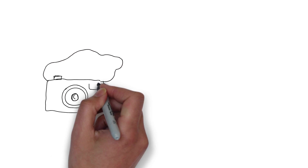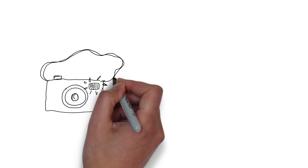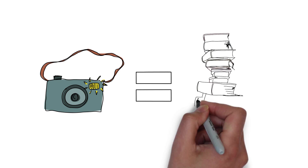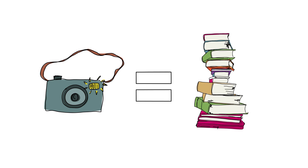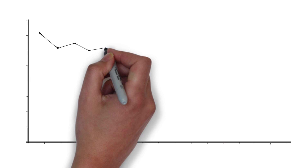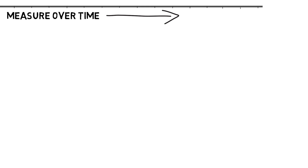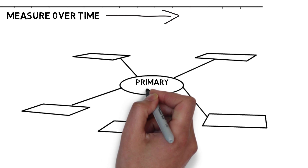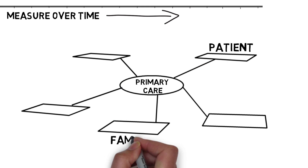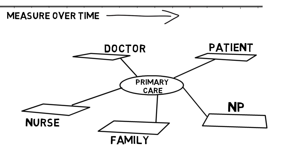The saying, "a picture is worth a thousand words," is very applicable in QI work when using run charts. A run chart is a graphical display of data plotted in chronological order. Since our systems of care are constantly evolving, the use of a run chart with data plotted over time provides us with the most realistic view of what is happening.